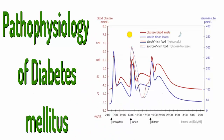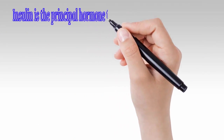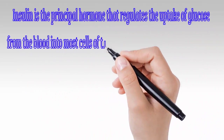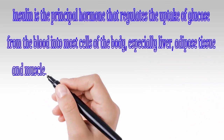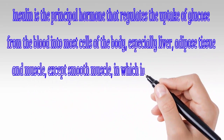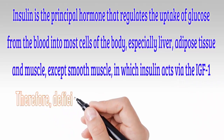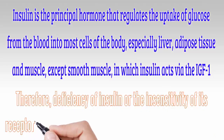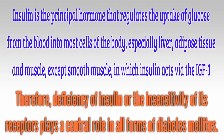Pathophysiology of diabetes mellitus: insulin is the principal hormone that regulates the uptake of glucose from the blood into most cells of the body, especially liver, adipose tissue, and muscle — except smooth muscle, in which insulin acts via the IGF-1. Therefore, deficiency of insulin or the insensitivity of its receptors plays a central role in all forms of diabetes mellitus.